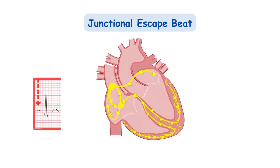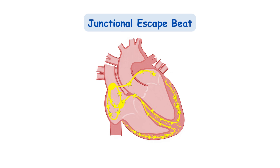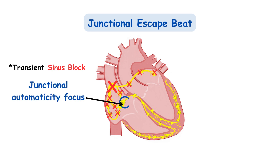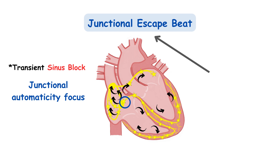Then we have the junctional escape beat. During a regular sinus rhythm, if a transient sinus block makes the SA node stop pacing and all atrial foci fail to take the leading position, a junctional automaticity focus will wake up to save the situation. The impulse emitted by the junctional focus will be conducted via the ventricular conduction system to the ventricles causing them to contract, and in some cases in a retrograde fashion to the atria too.